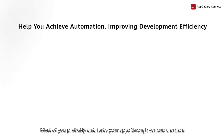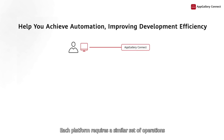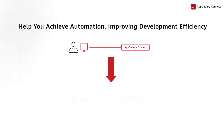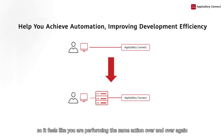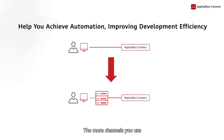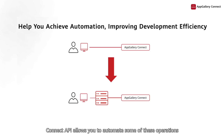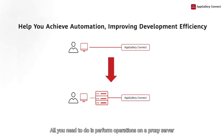Most of you probably distribute your apps through various channels. Each platform requires a similar set of operations, so it feels like you're performing the same action over and over again. The more channels you use, the more time-consuming this gets. Connect API allows you to automate some of these operations, saving you time. All you need to do is perform operations on a proxy server, which in turn synchronizes the operations to all channels.